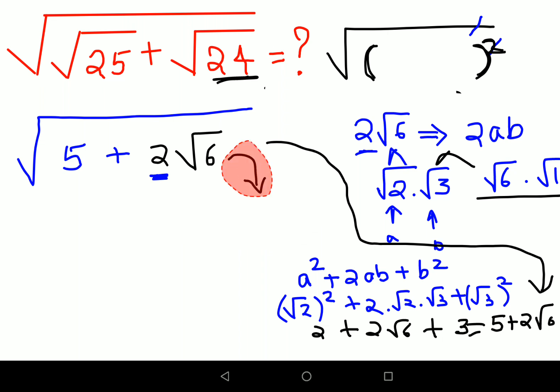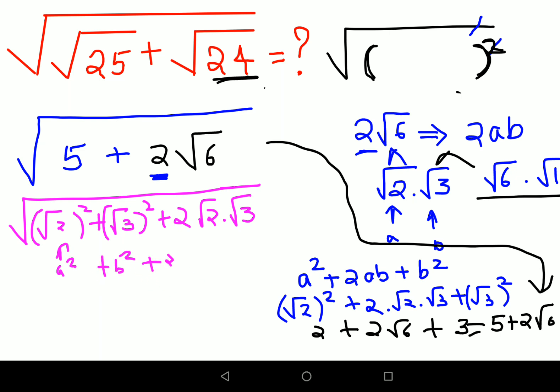So now what I can do over here is I will write 5 as nothing but what root 2 the whole square plus root 3 the whole square plus 2 root 2 into root 3, right? So now this looks like what a square plus b square plus 2ab which is nothing but the expansion of a plus b the whole square, right?